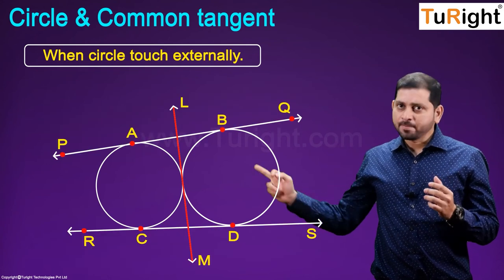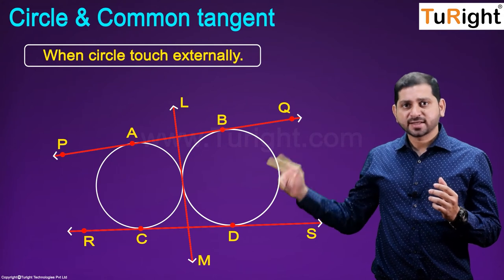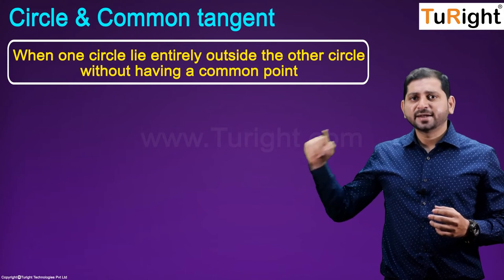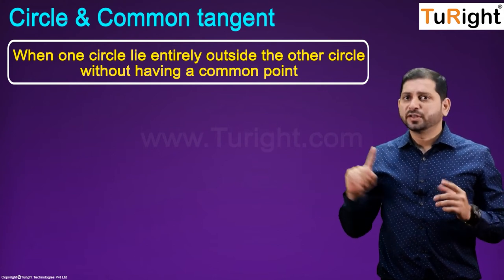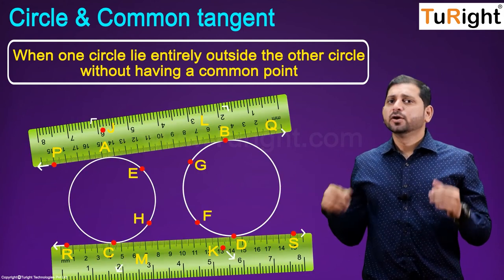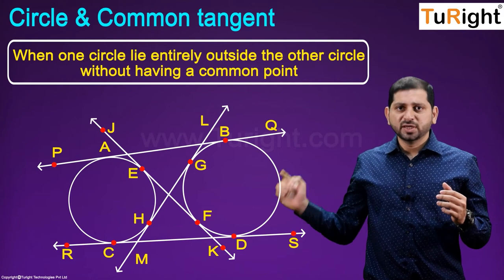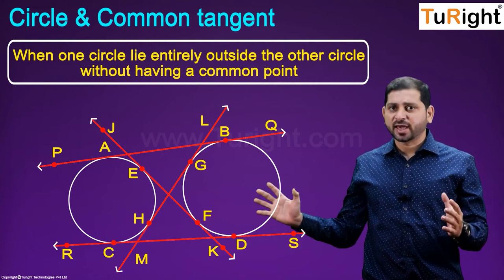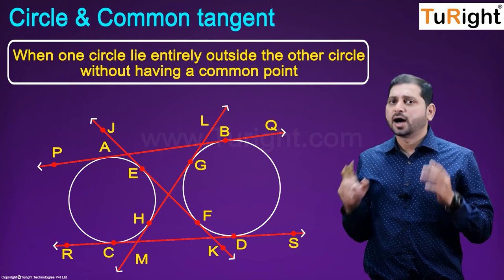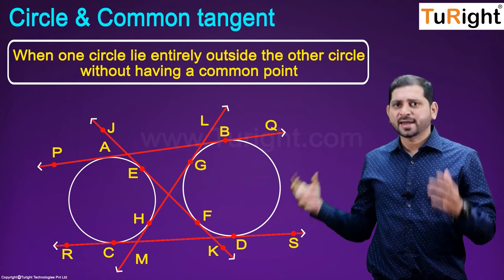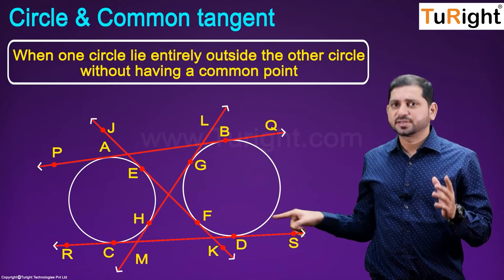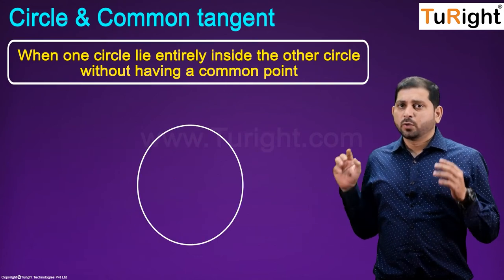Case 3: When one circle lies entirely outside the other circle without having a common point — in this case, there will be four common tangents: PQ, RS, LM, and JK, as shown. Here PQ and RS are two direct common tangents, while JK and LM are two indirect common tangents, which are transversals.